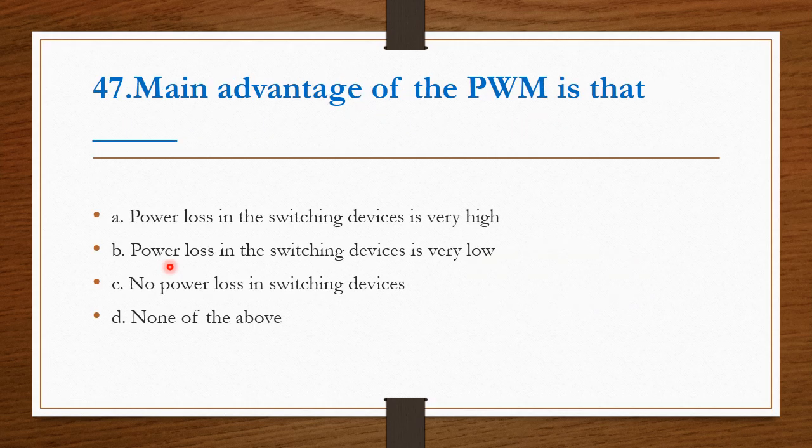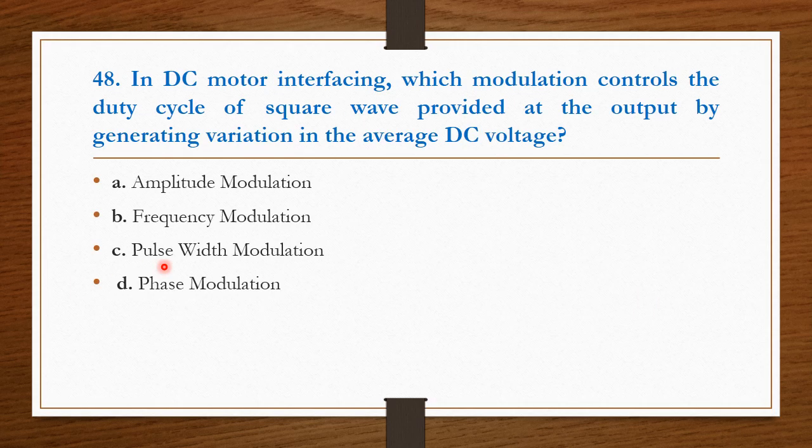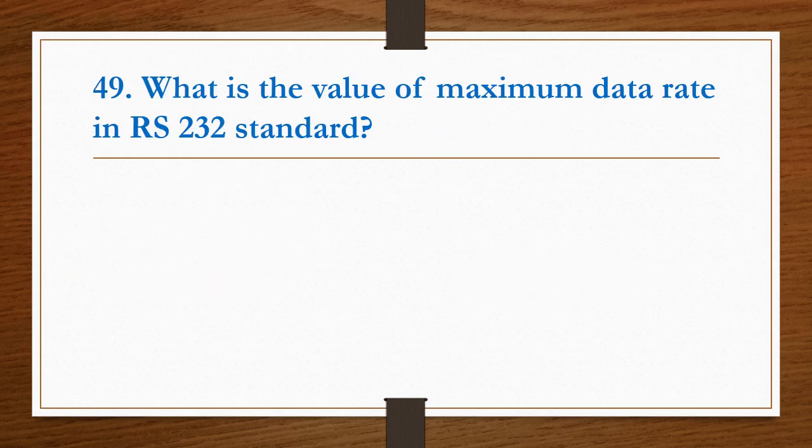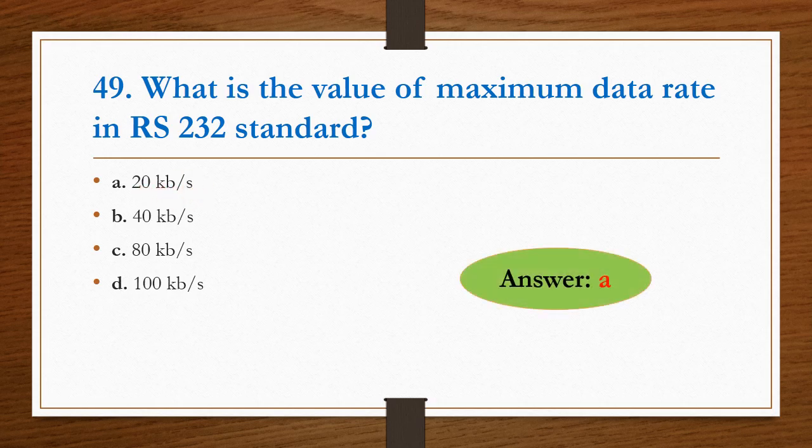The main advantage of PWM is that power loss in the switching devices is very very low. Option B is the right answer. In DC motor interfacing, which modulation controls the duty cycle of a square wave provided at the output by generating variations in the average DC voltage? Pulse width modulation. Option C is the right answer. What is the value of maximum data rate in RS-232 standard? 20 kilobits per second. Option A is the right answer.